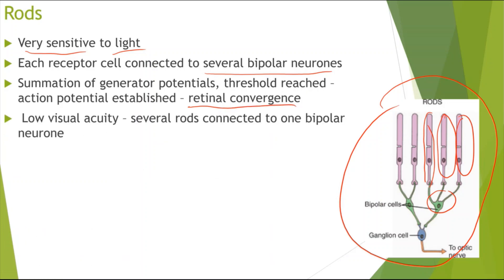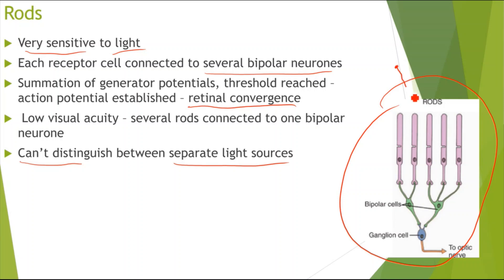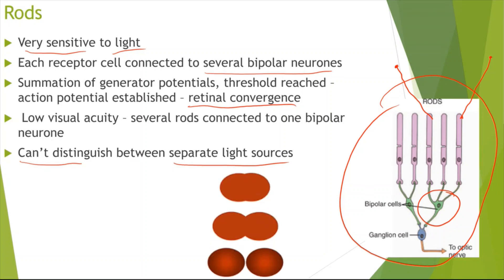Because of retinal convergence, there is low visual acuity. Because several rods are connected to one bipolar neuron, the brain cannot distinguish between separate light sources. For example, if light hits one rod cell and different light hits another rod cell, the brain would think they are the same because both are connected to the same bipolar neuron. So the brain might think two different dots are basically the same dot.